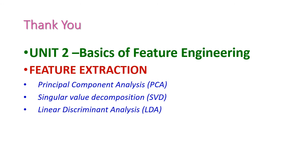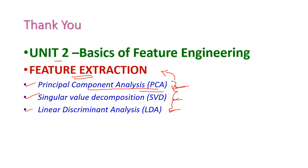So far, we have seen what is feature extraction from the second unit, Basics of Feature Engineering. There are three different methodologies used for reducing the dimension of a dataset: PCA (Principal Component Analysis), Singular Value Decomposition, and Linear Discriminant Analysis. In the next class, we will see all those models in more detail, starting with PCA with examples.